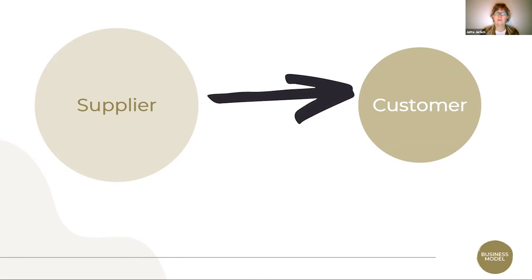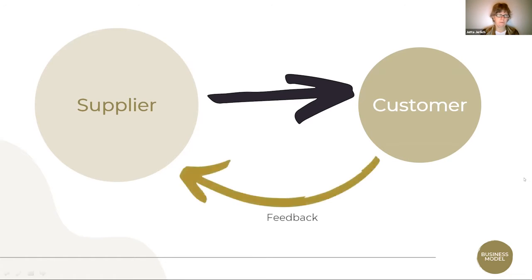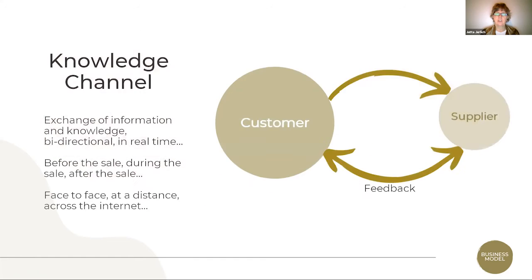We had a supplier who is delivering something — a product or a service — to a customer, and maybe there was feedback. There was a big power in the position of the supplier, as you can see with a much bigger bubble, and a much smaller bubble for the customer. Well, this is how it used to be, and now this relationship has changed a lot. The supplier bubble has shrunk quite a bit and the customer has a much bigger power, embedded in information flow that goes both ways.